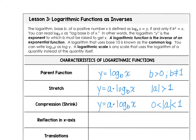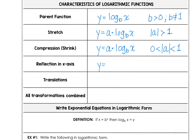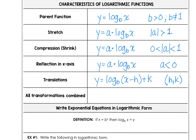I'm using absolute value because the reflection in the x-axis occurs when the a value is negative — that gives you a reflection of your parent function across the x-axis. You can move logs to the left or right by adjusting the argument: x minus h moves right, x plus h moves left. Adding a number k shifts the graph up, and subtracting k shifts it down. The h-k ordered pair translates the parent function, so a times log base b of x minus h plus k is the full model equation for translating any logarithmic function.